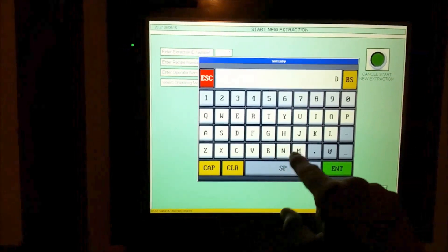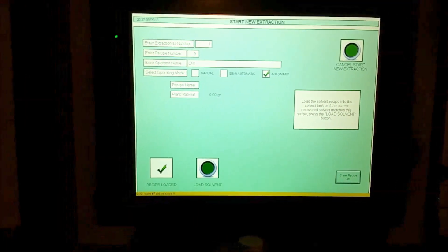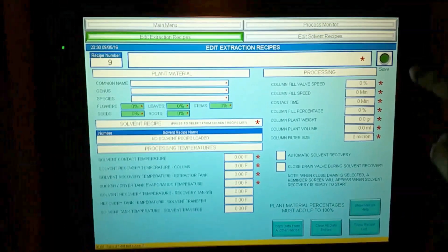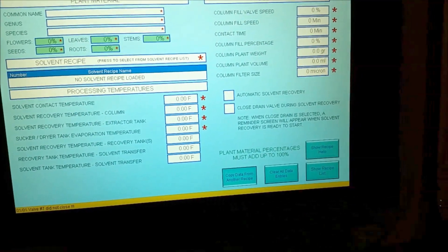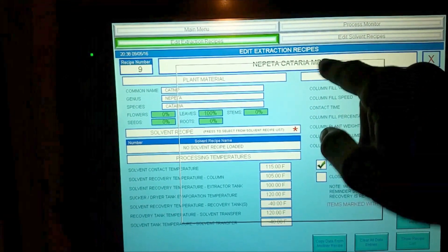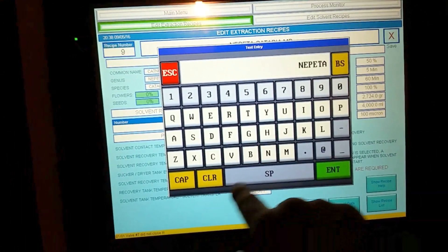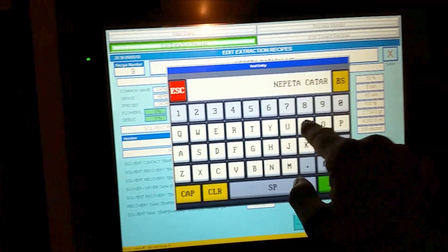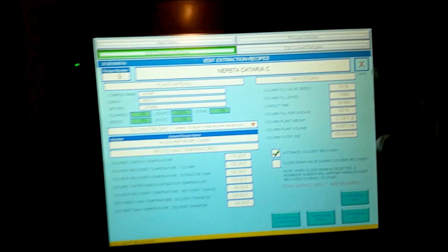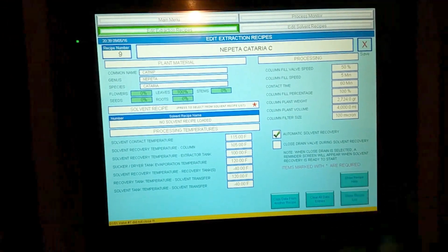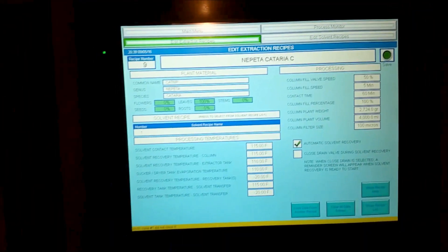I want full automatic extraction, so load the recipe. I made a little mistake—I forgot to hit save, so I've got to do that all over again. Copy data from another recipe, number eight, it populates. We'll call it Nepeta cataria C. Now you have to hit this save button. There's something that it's wanting—mark with asterisk. Solvent recipe, so we'll say load number one. Now it's ready to save.